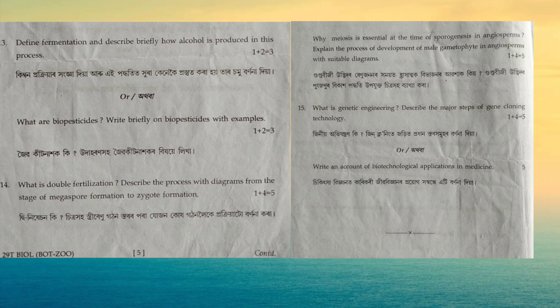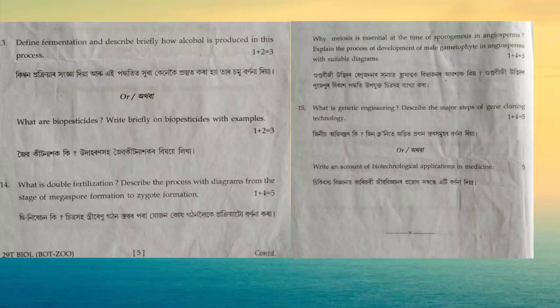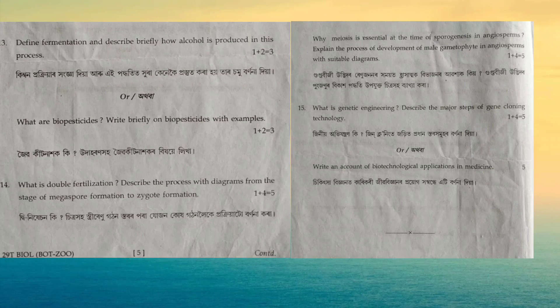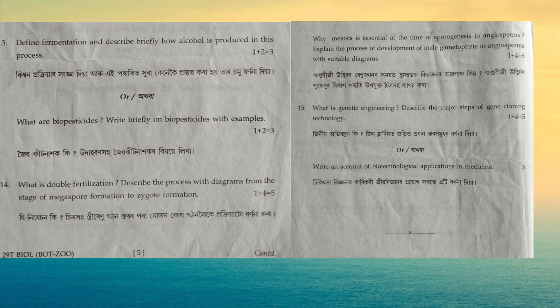Another question asked: why is meiosis essential at the time of sporogenesis in angiosperms? Explain the process of development of the male gamete in angiosperms. Meiosis is essential at the time of microsporogenesis because it reduces the chromosome number, producing haploid microspores. You also have to write how, from the pollen grain, two male gametes are produced within the male gametophytic structure.